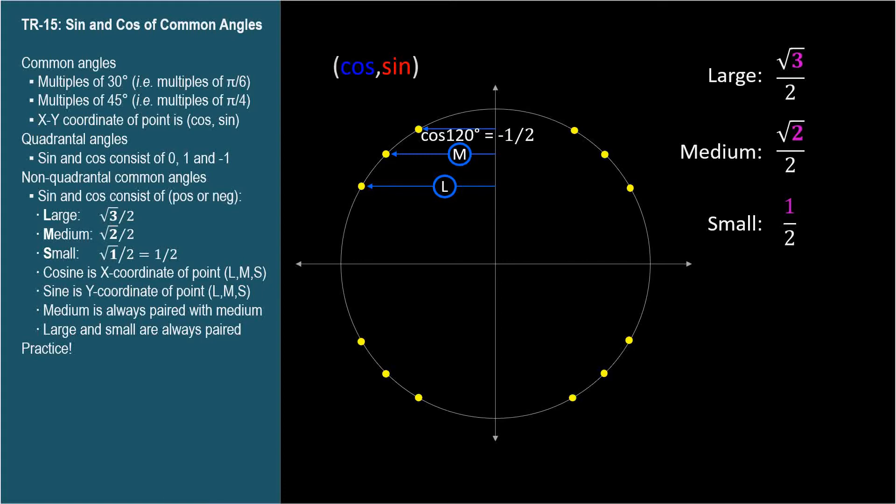The cosine of one-thirty-five degrees is negative medium, so negative square root of two over two. And the cosine of one-fifty degrees is negative large, so negative square root of three over two.